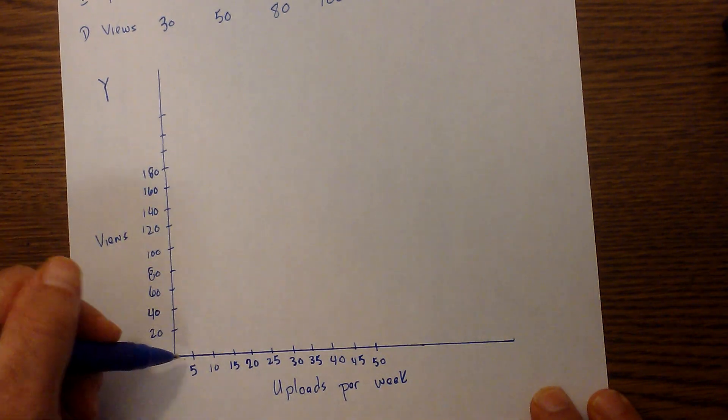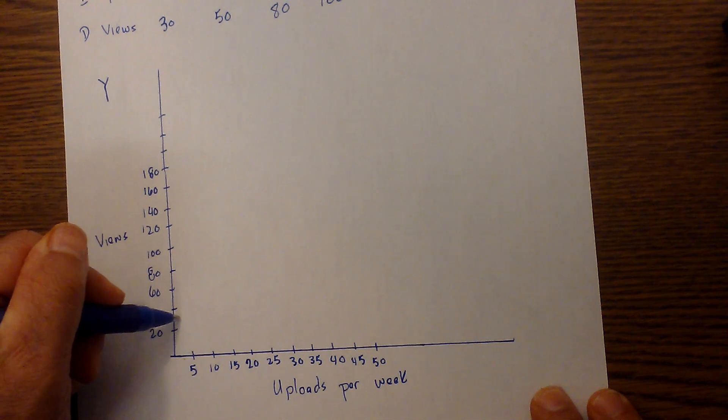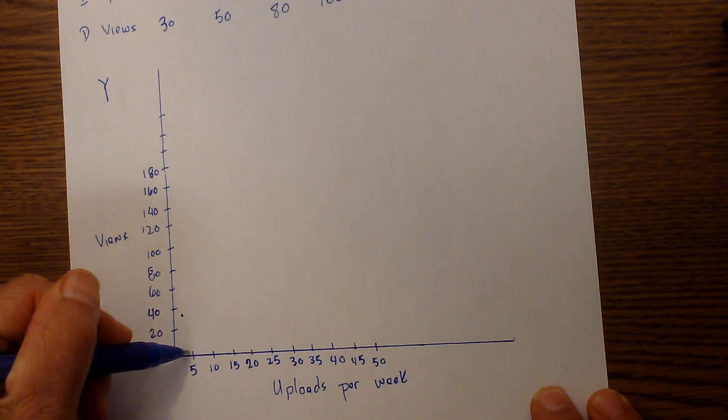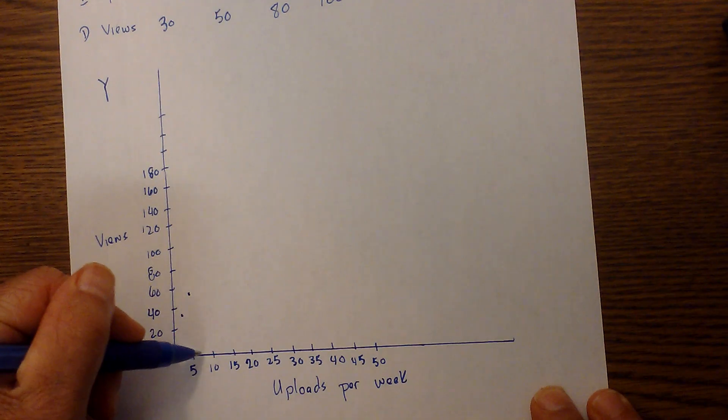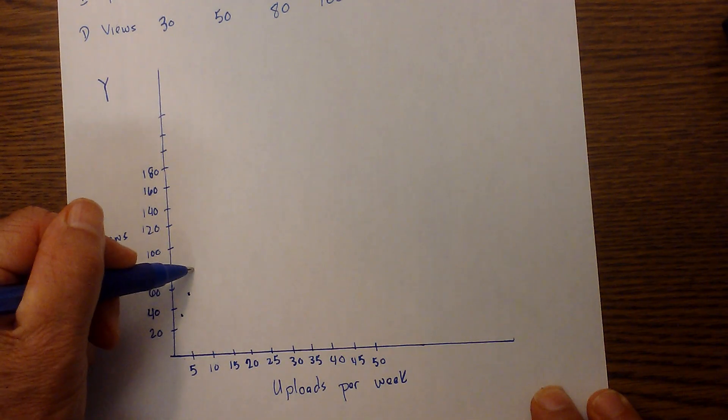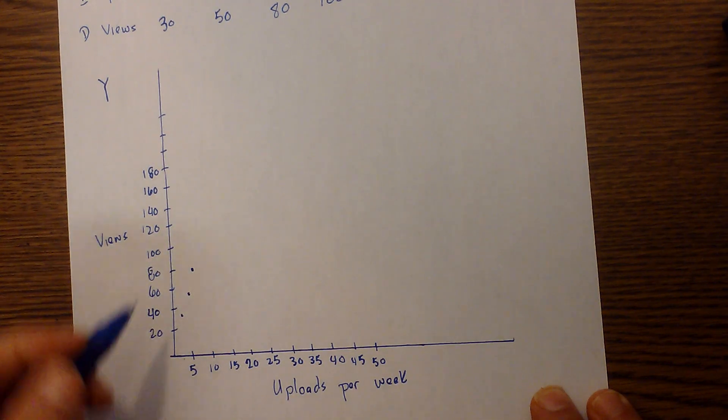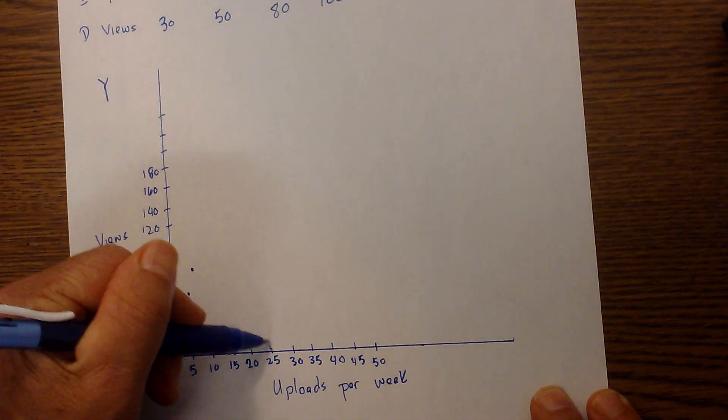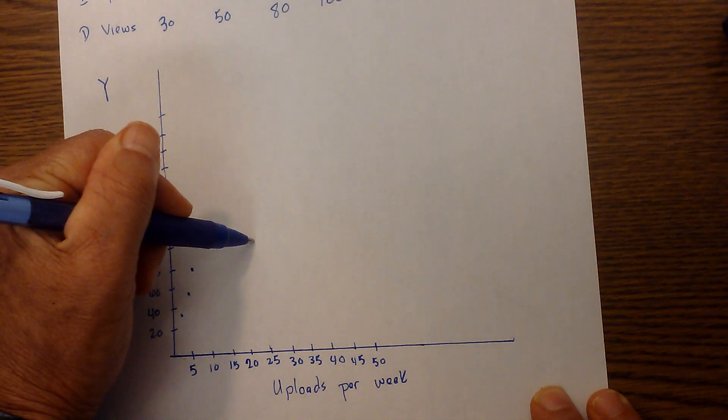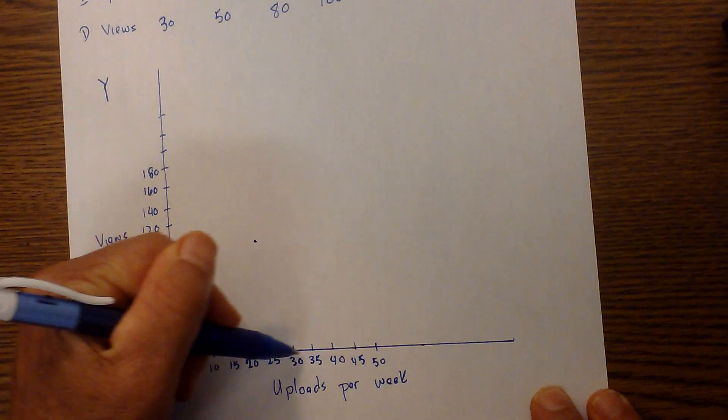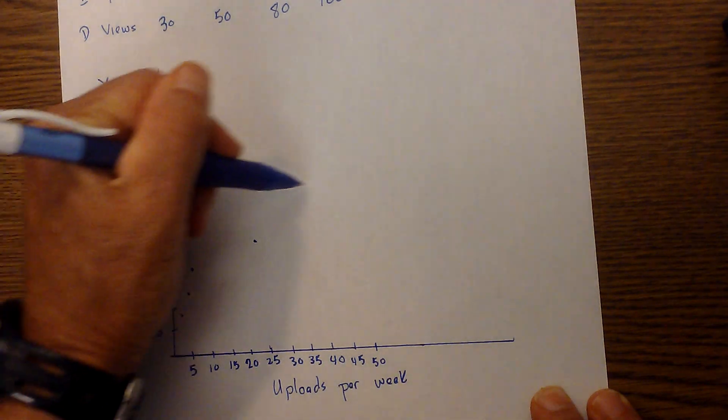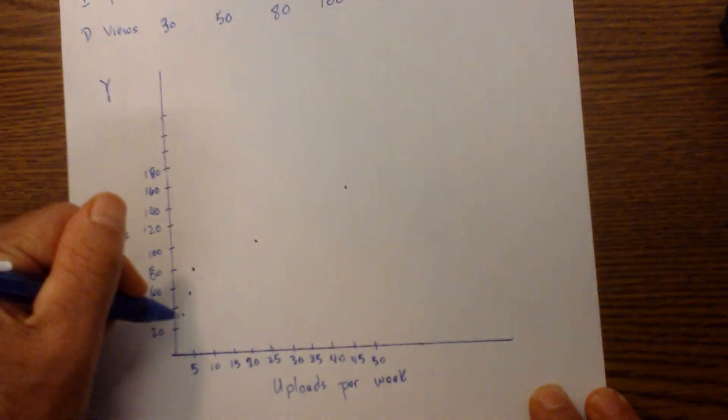I'll go 1 to 30, and 3 to 50, 5 to 80, and then 25 and 100, and 45 and 150. Again, you can connect them or do whatever you'd like with that data.